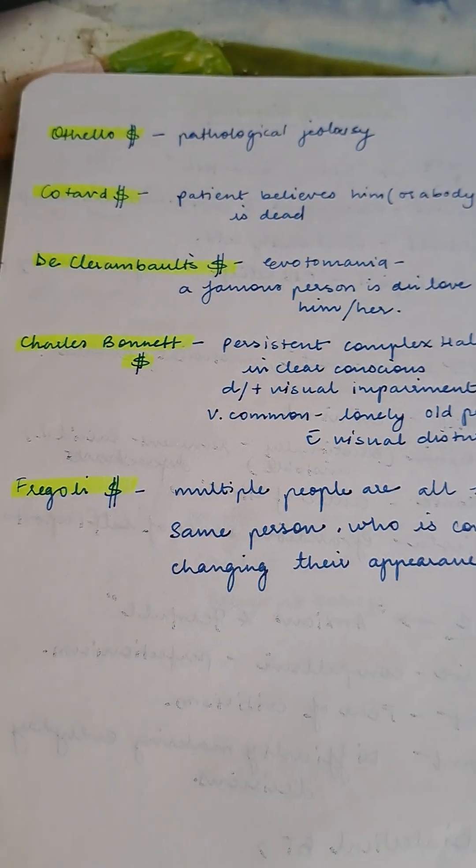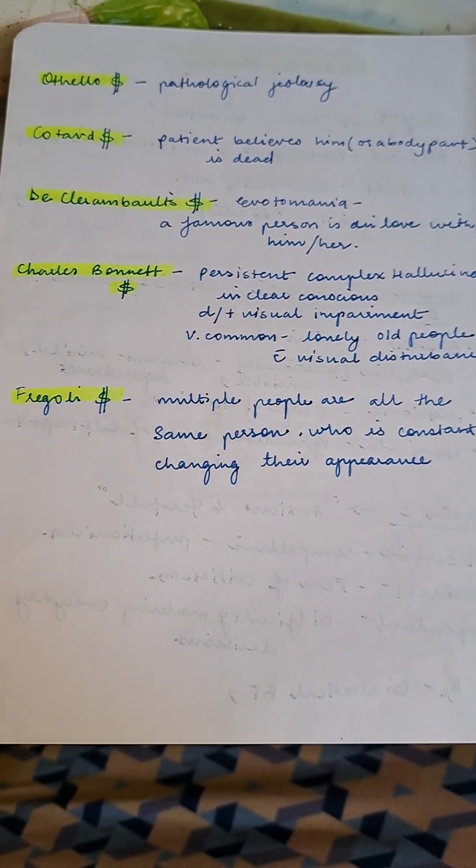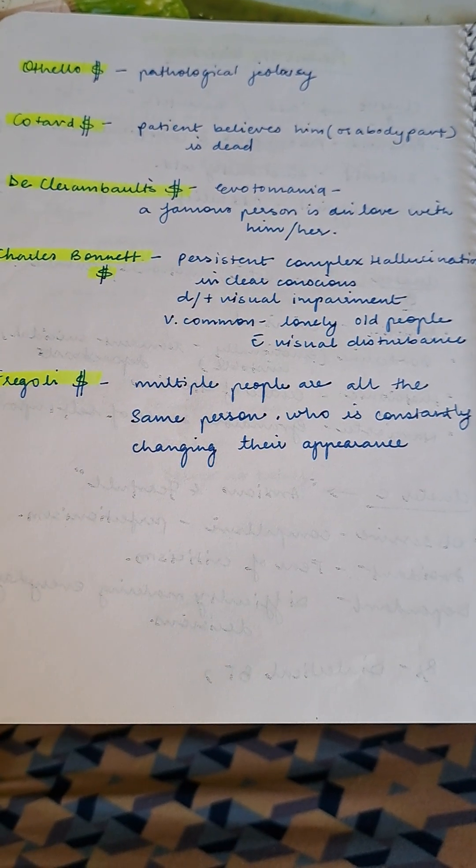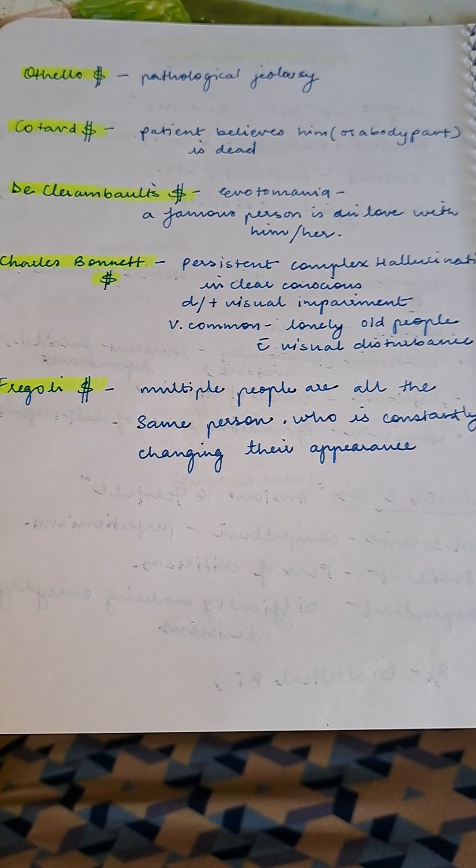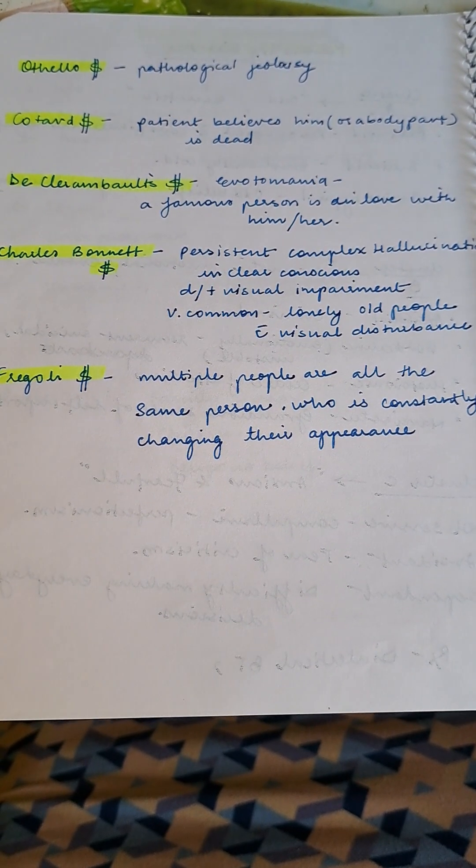Syndromes. Othello syndrome: pathological jealousy. Cotard syndrome: patient believes themselves or a body part is dead. De Clerambault syndrome: erotomania, a famous person is in love with them.